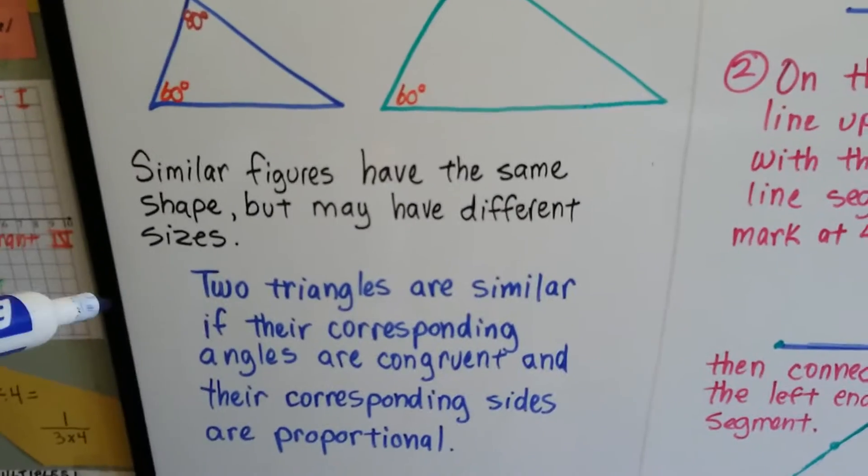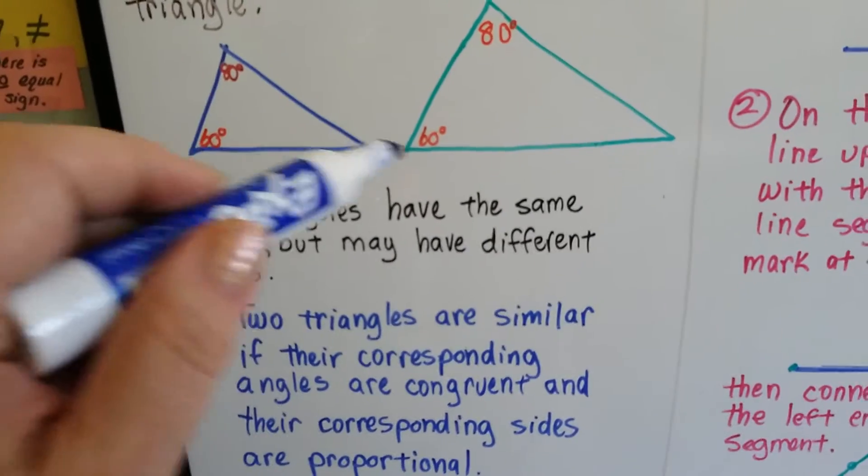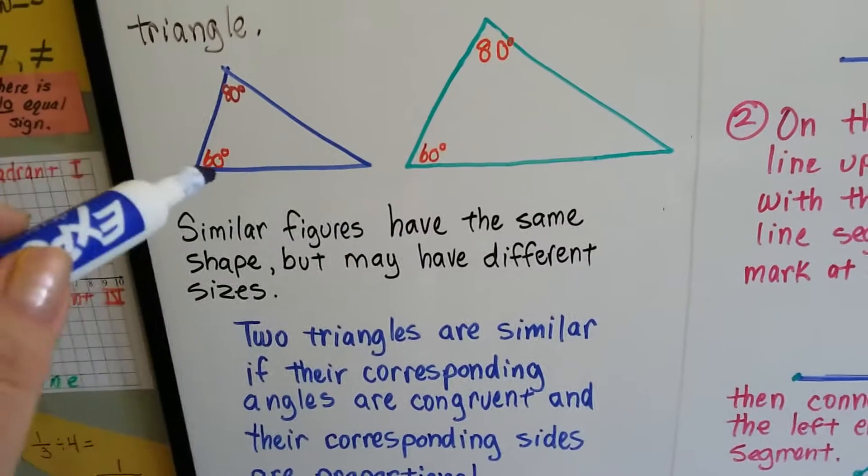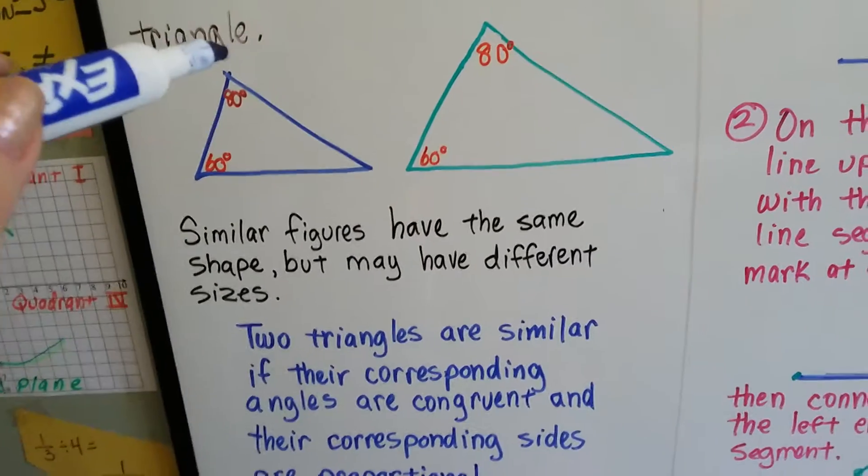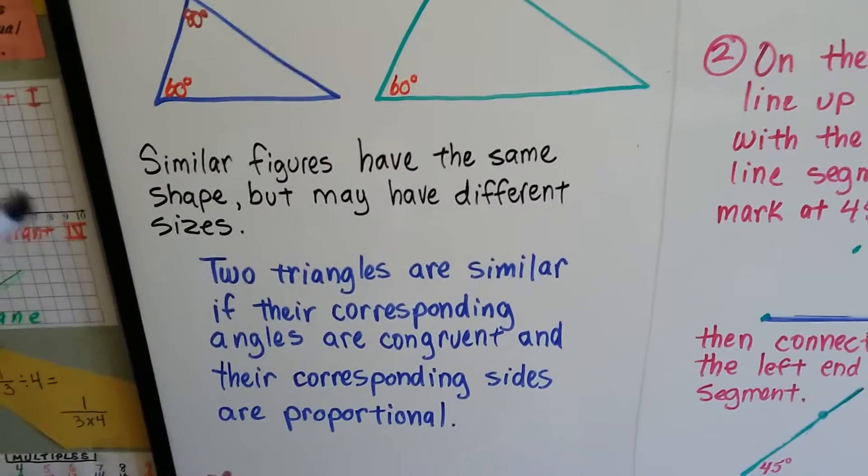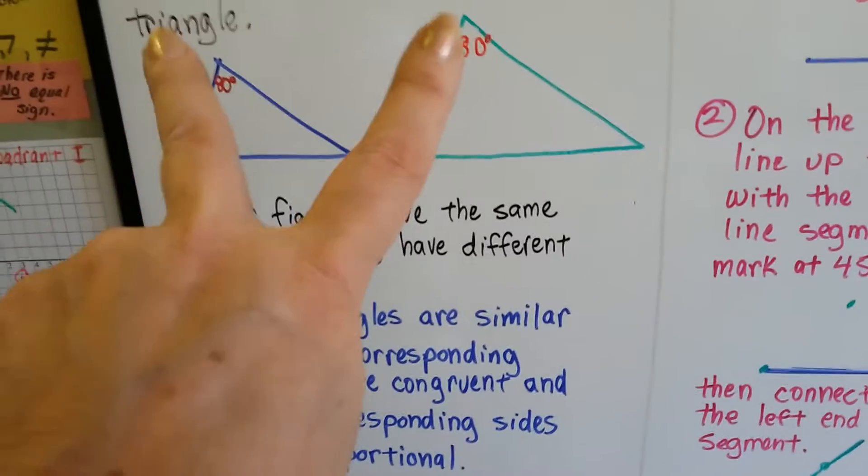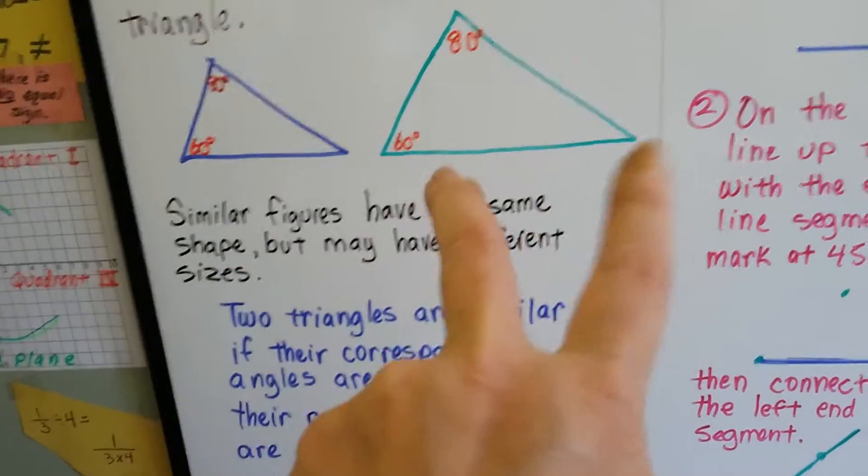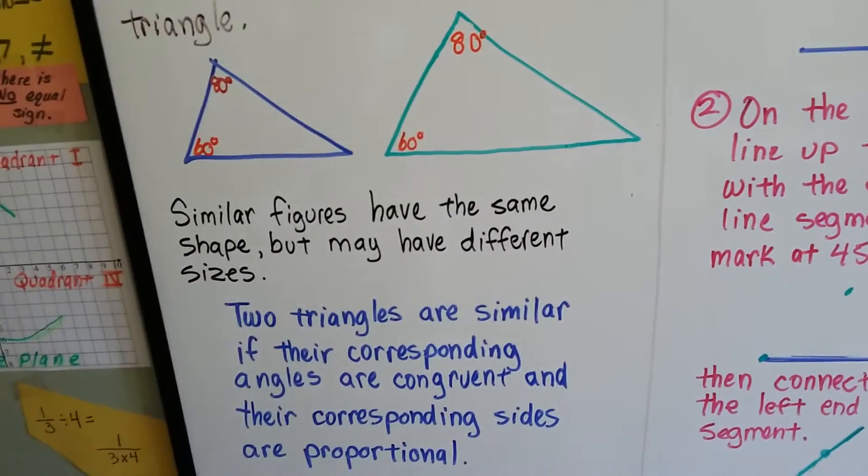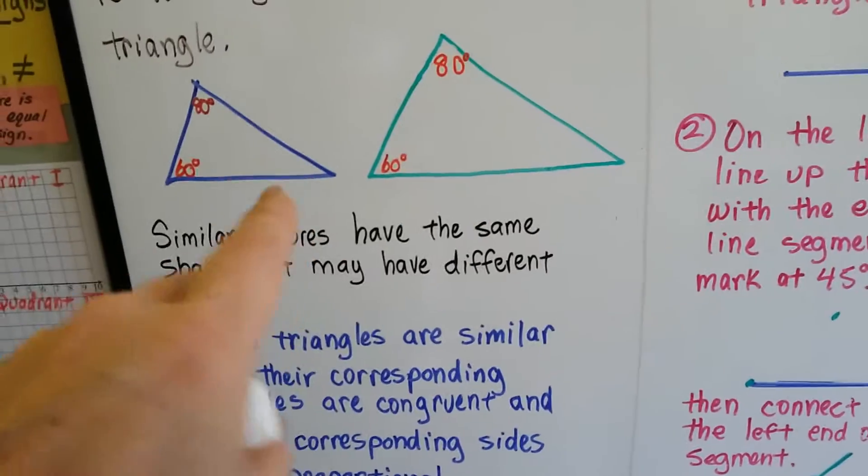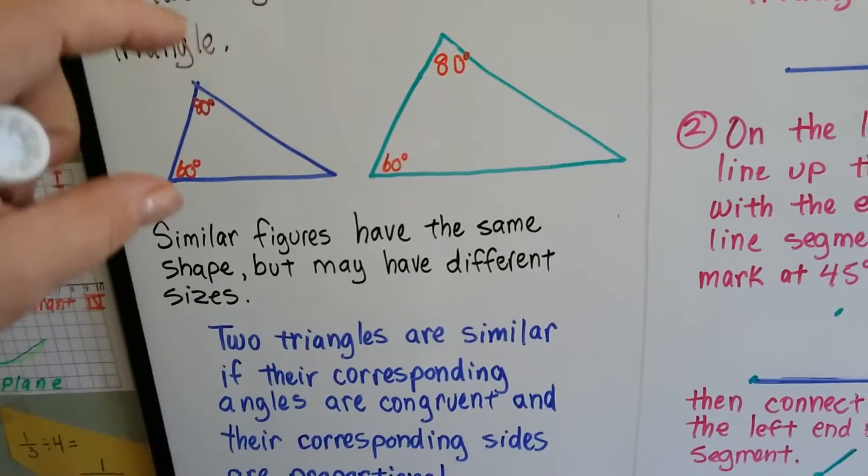So two triangles are similar if their corresponding angles, these two correspond to each other and these two correspond to each other because they're at the top. If their corresponding angles are congruent and their corresponding sides are proportional. So even these sides are proportional to each other. If we wrote them as fractions, they would be equal fractions, the length.